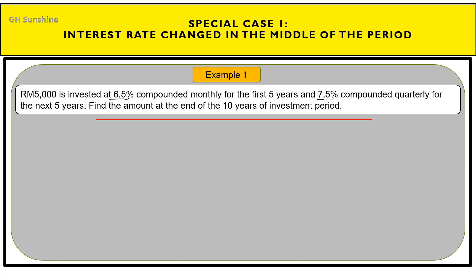Look at this number line. Start from here, then here is 5 years, and this one is 10 years. For the first period, K equals 6.5%, and for the remaining 5 years the interest rate K equals 7.5%. So how do we calculate the total amount at the end of the investment period?